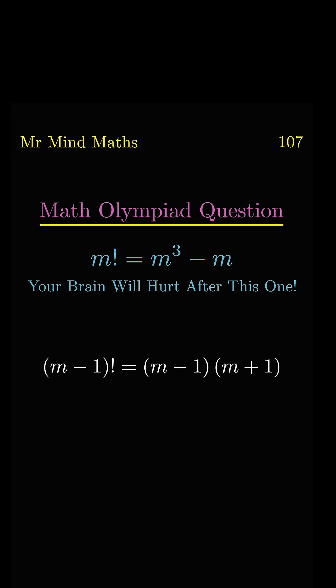So it will become m minus 1 times m minus 2 factorial. Now m minus 1 on both sides will get cancelled, so finally we will get m minus 2 factorial equals m plus 1.